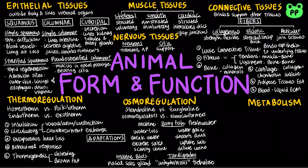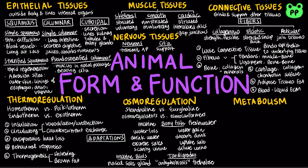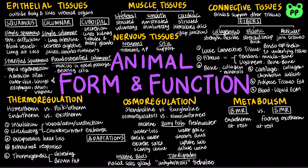Metabolism refers to the life-sustaining chemical reactions in organisms. BMR, or the basal metabolic rate, refers to the minimum metabolic rate of a non-growing endotherm at rest. SMR, or standard metabolic rate, refers to the metabolic rate of a fasting, non-stressed ectotherm at rest at a specific temperature.